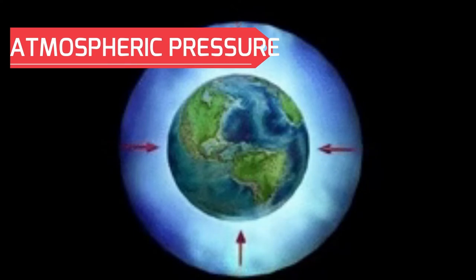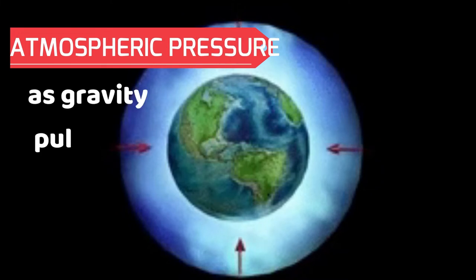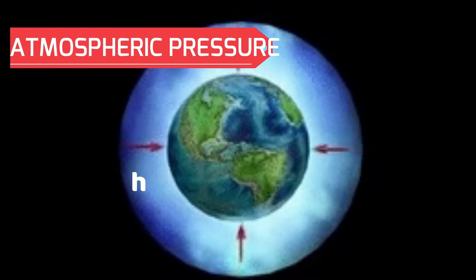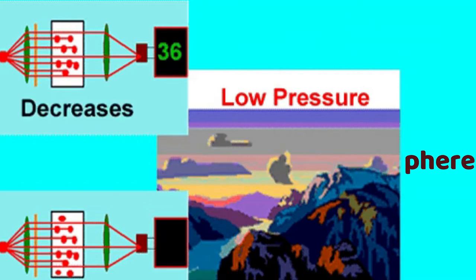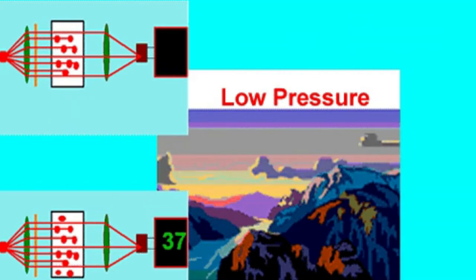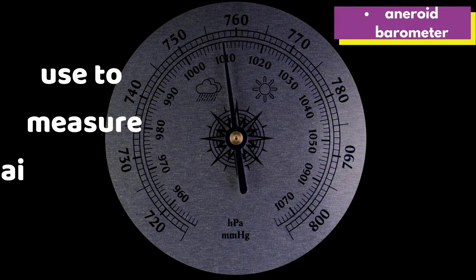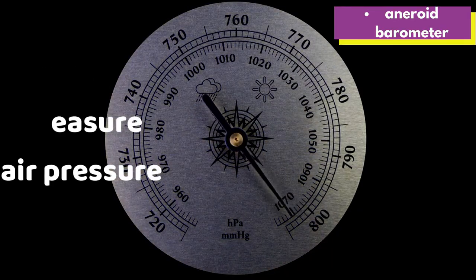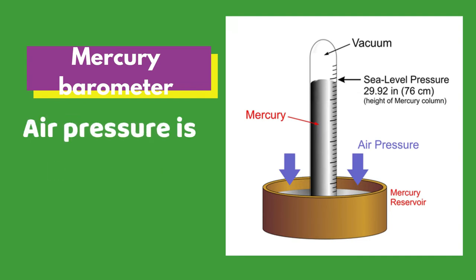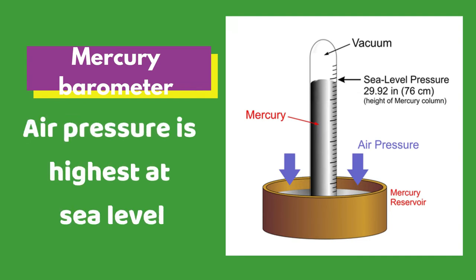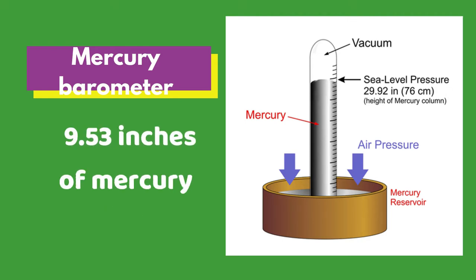Atmospheric pressure is a force exerted on a surface by the air above it as gravity pulls it toward the Earth. It is also called air pressure, exerted by the weight of the atmosphere. A barometer is an instrument used to measure air pressure. One way to measure air pressure is in inches of mercury — air pressure is highest at sea level, measuring 29.53 inches of mercury.